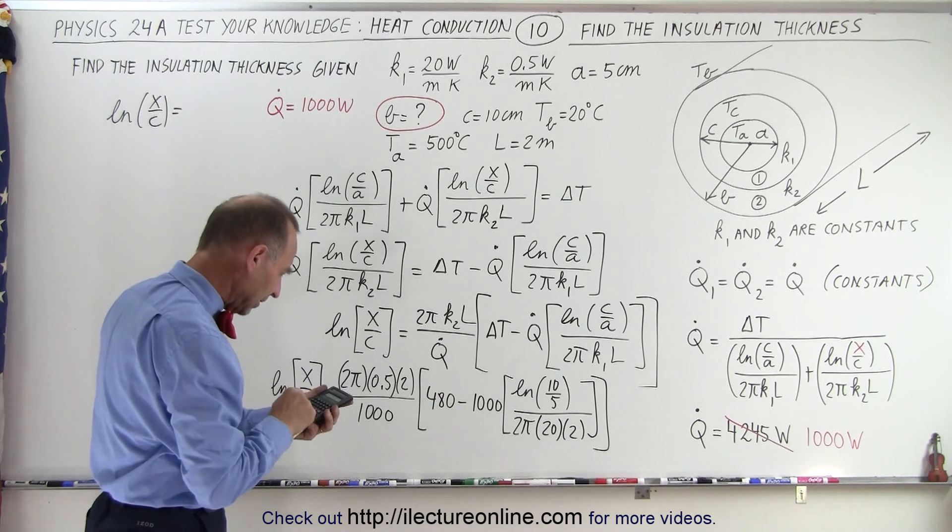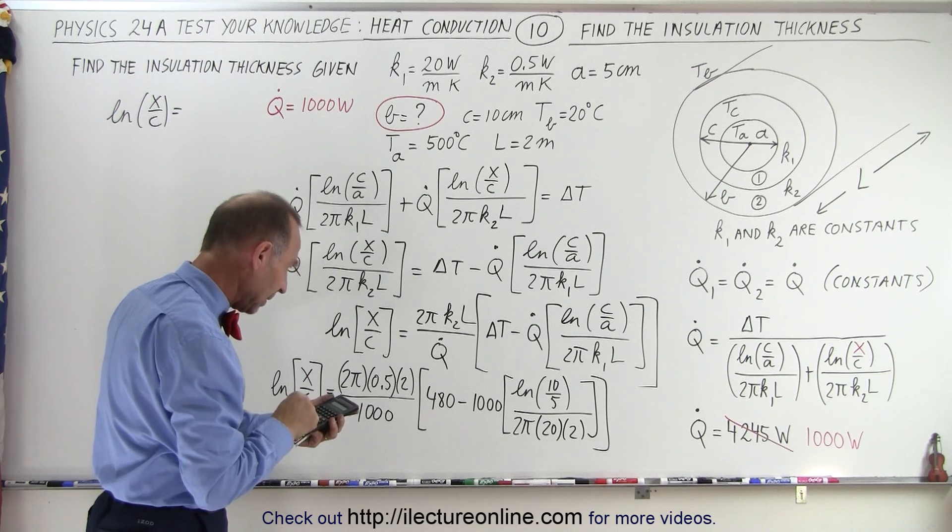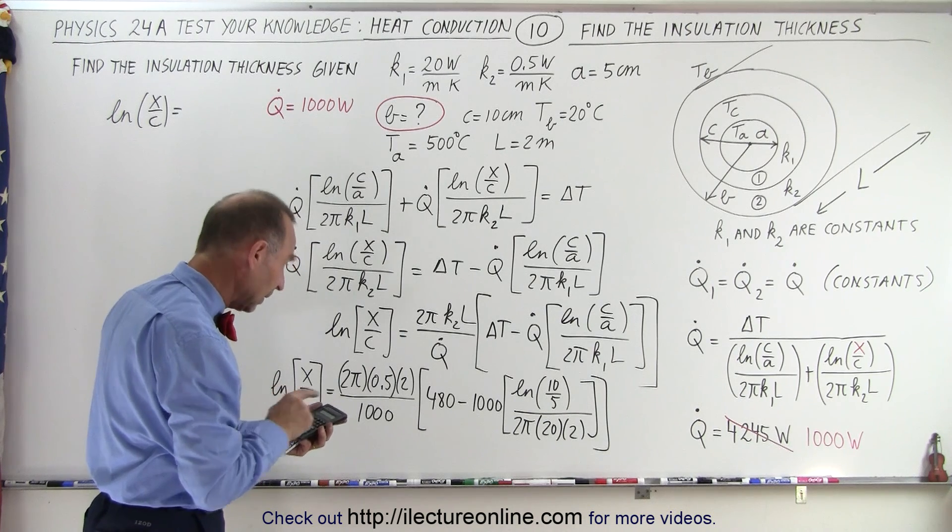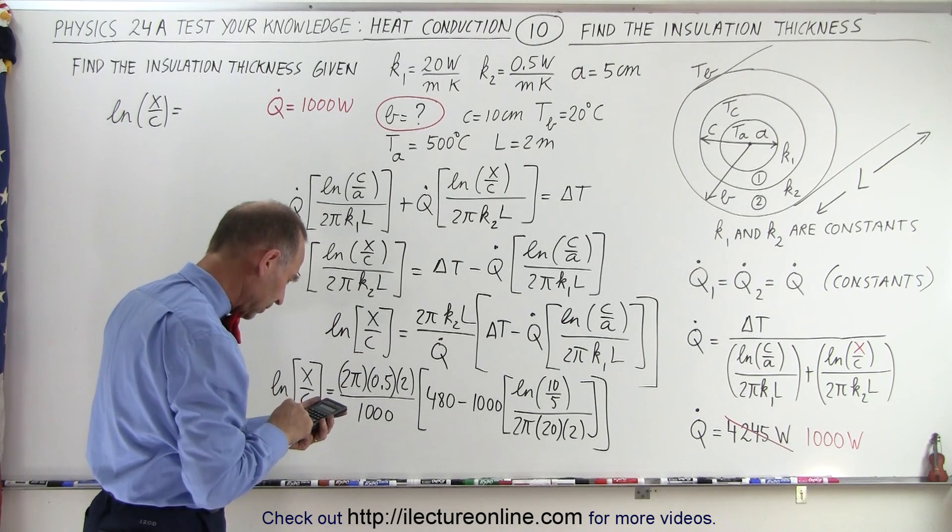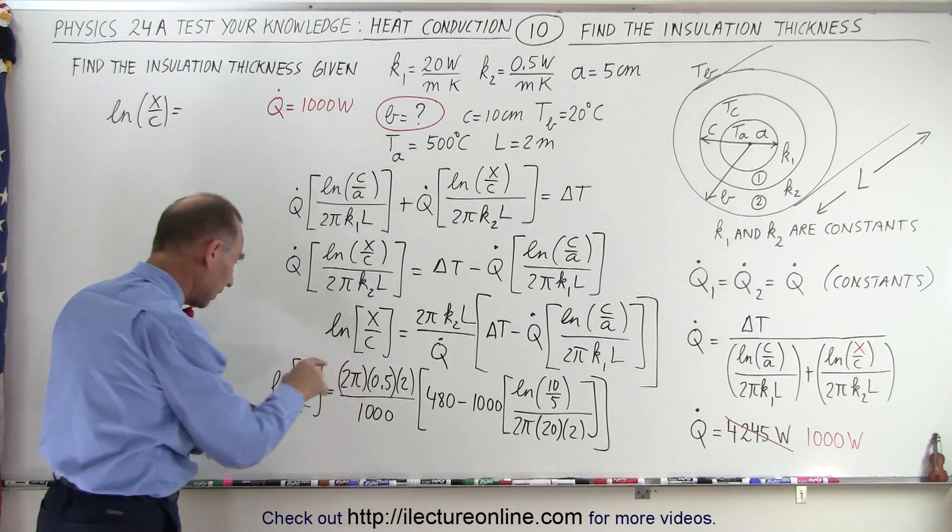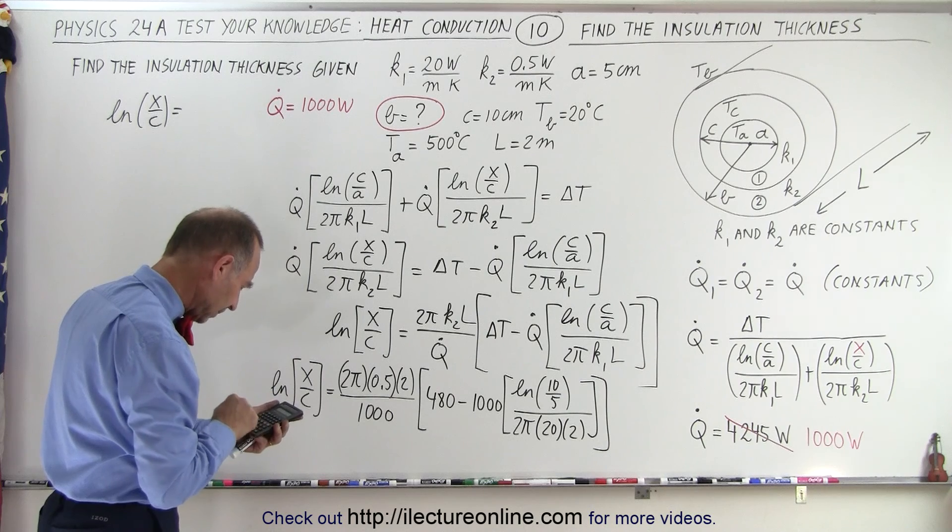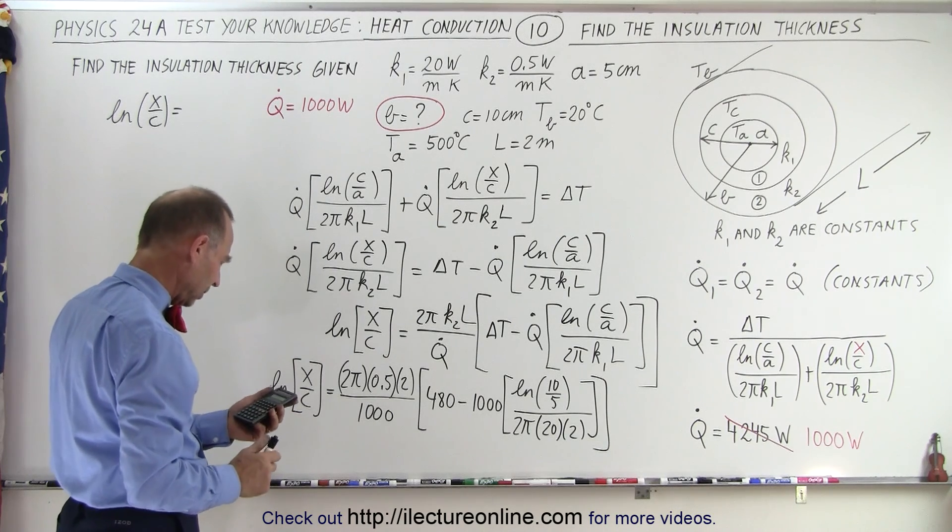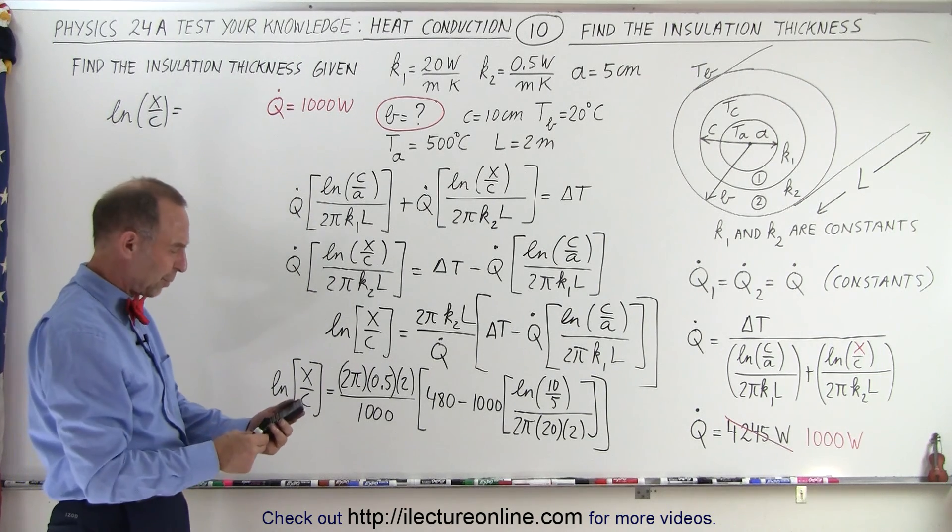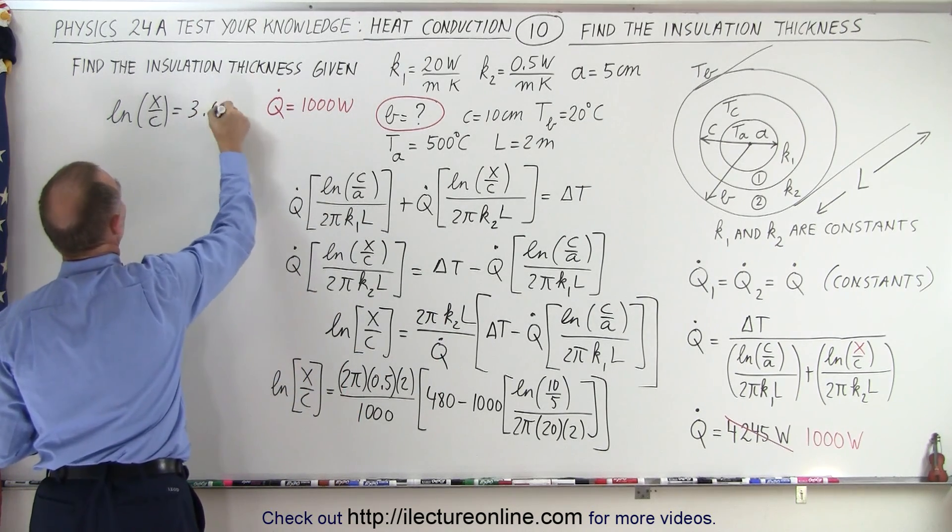So working from the inside, we take the natural log of 2, divide by 2, divide by pi, divide by 40, multiply times a thousand. Subtract that from 480, so minus plus 480, and then multiply that times 2 pi, and divide by a thousand. So I get an interesting number, if I can read it, 2.998, that's close enough to 3.0, so let's call it 3.0. That means the natural log of x over c is 3.0.